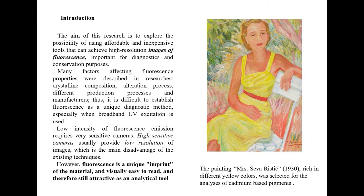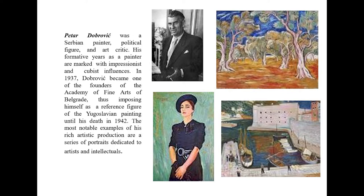The painting Mrs. Ševa Ristić by Petar Dobrović, rich in different yellow colours, was selected for this analysis of cadmium-based pigments. Petar Dobrović was a Serbian painter, political figure and art critic. His formative years as a painter are marked by Impressionist and Cubist influences. In 1937, Dobrović became one of the founders of the Academy of Fine Arts of Belgrade, imposing himself as a reference figure of Yugoslavian painting until his death in 1942.